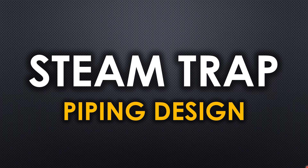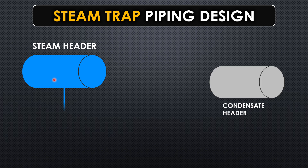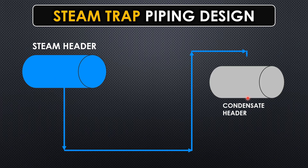Let's understand about steam trap piping design — where it is used and how it is used. Generally in a steam header, you will find condensate that needs to be diverted to the condensate header. But you simply cannot construct any line without any basis — you need to understand the concept first, and only then will you be able to achieve the requirements.